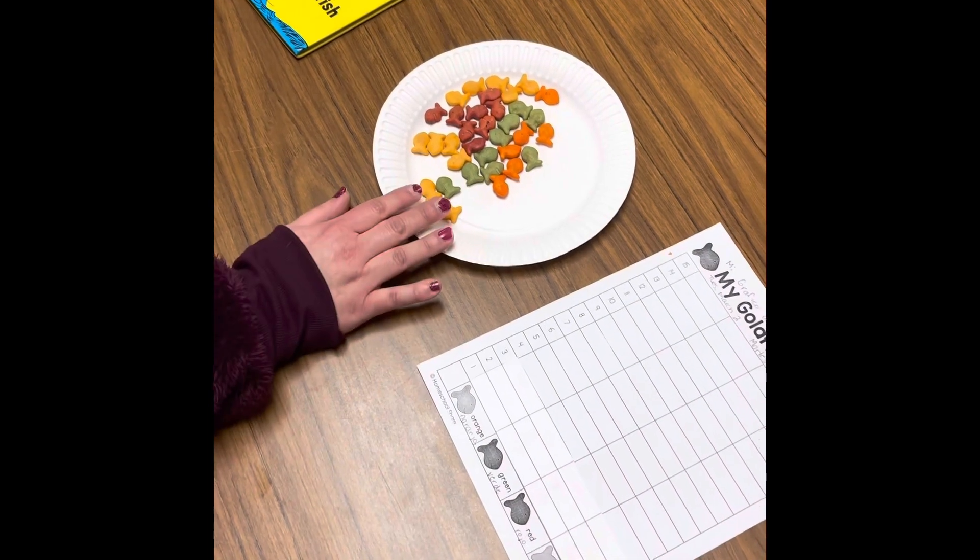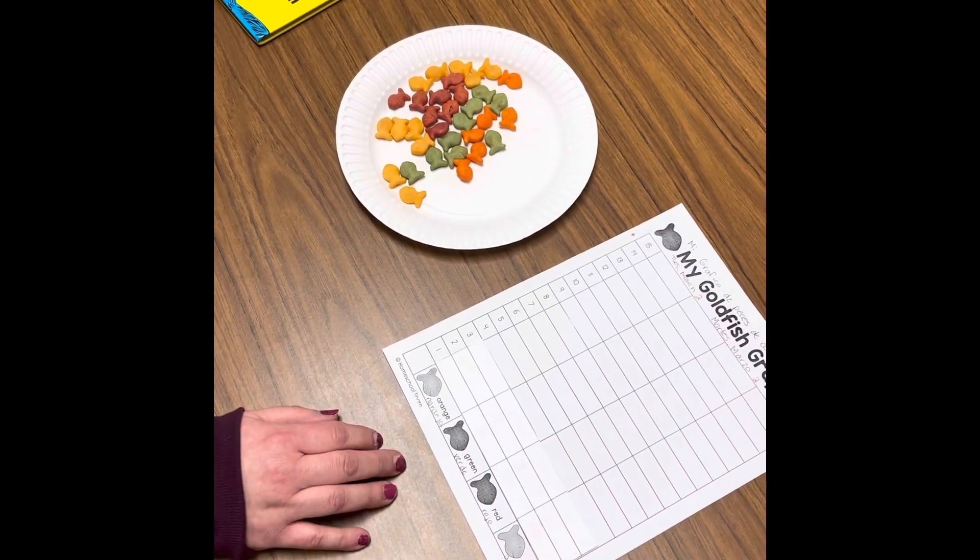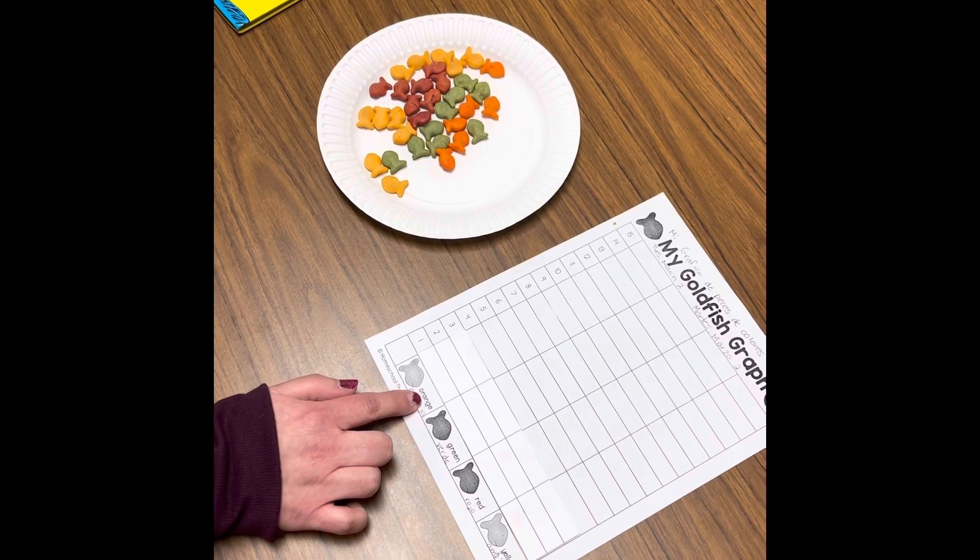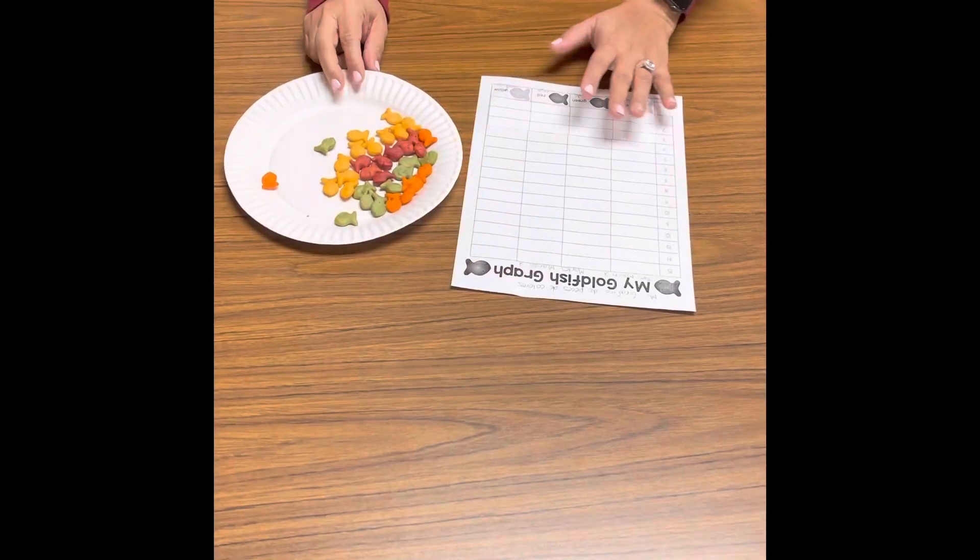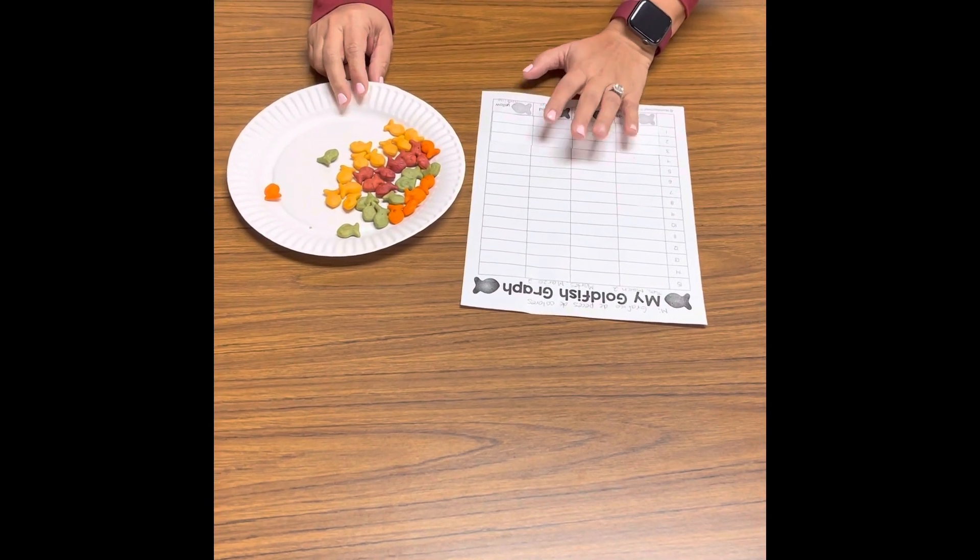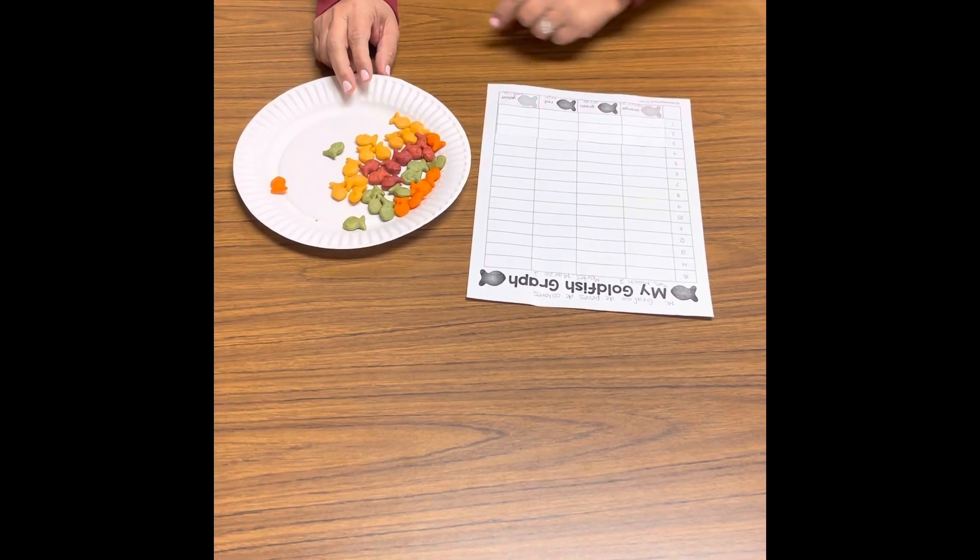Today, we're going to take our colored goldfish and we're going to graph them by color. We're going to look for the orange, green, red, and yellow. Hoy vamos a hacer esta gráfica y vamos a clasificar los pescados por colores.